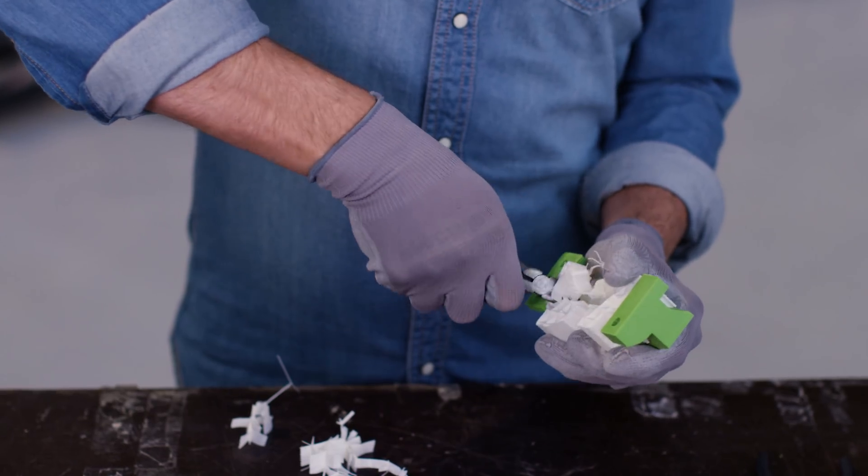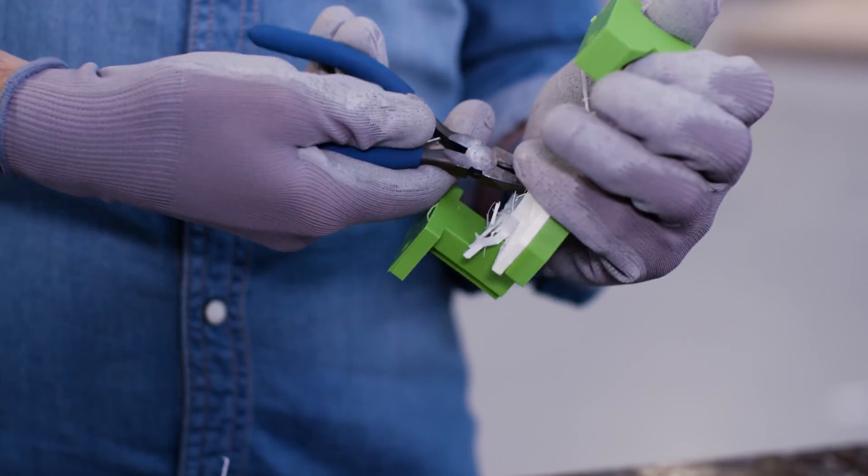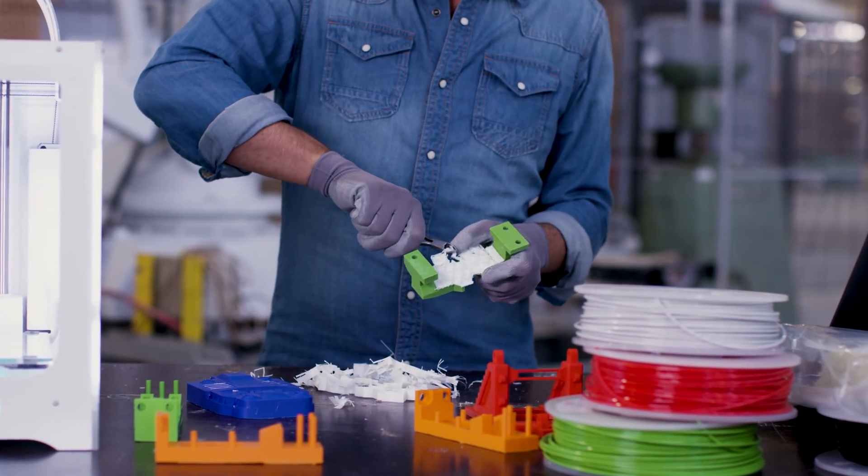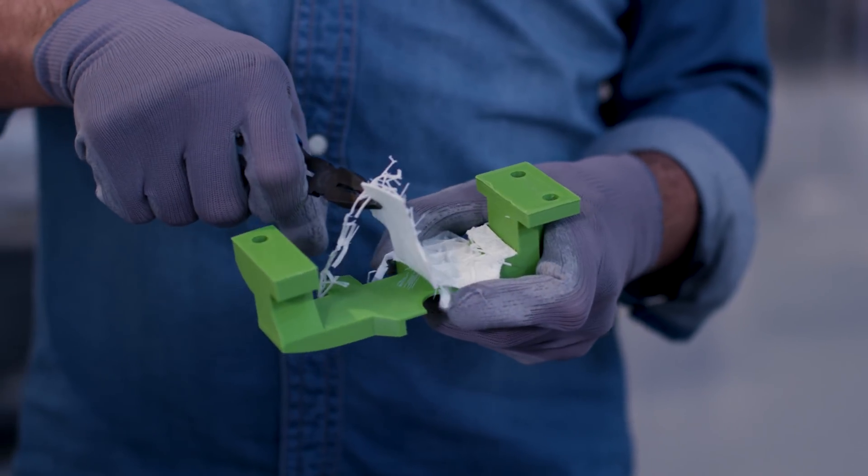After removing the majority of the support infill, loosen the support interface as much as possible with cutting pliers. Then pull it away from the model.